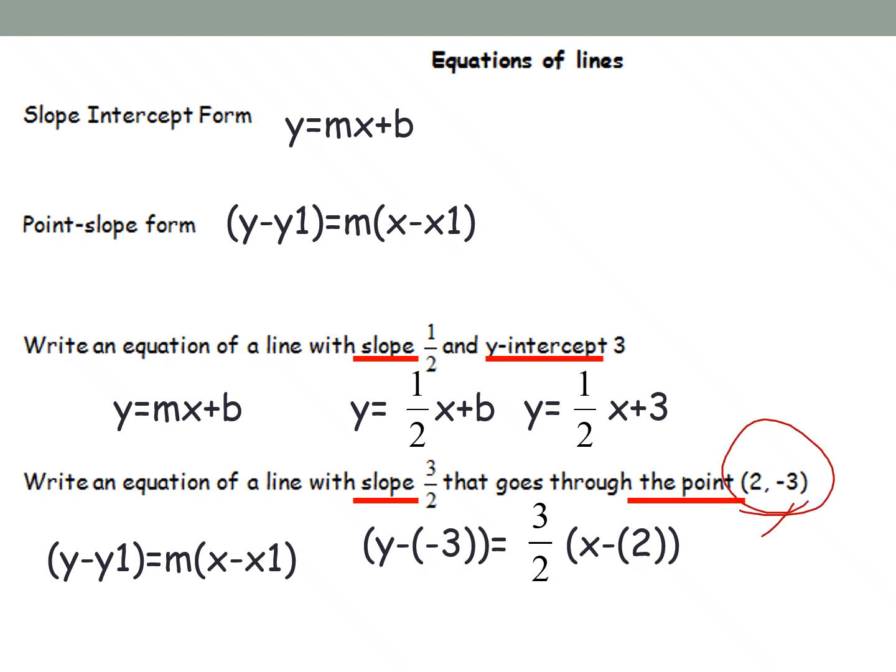And reminder here that the equation has y minus y1. So when you plug in that negative 3, you need to make sure that you keep the negative on there. And a negative times a negative is a plus. So it would be y plus 3 equals our slope, which is m, 3 halves, times x minus 2.